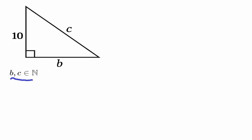Since it's a right triangle, we need to use the Pythagorean theorem: a² + b² = c². We are given a = 10, so that means 10² + b² = c², and 10 squared is 100, so 100 + b² = c².